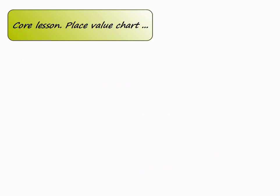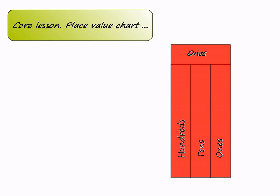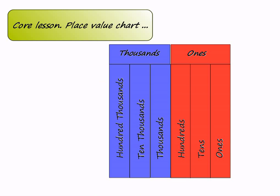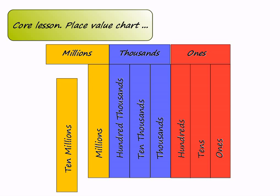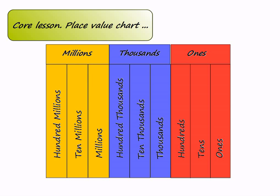A place value chart is a chart or table used to determine the position and value of a digit in a number. To the extreme right we have ones, then tens, then hundreds. After hundreds we start with thousands, ten thousands, and hundred thousands. After hundred thousands we have millions, ten millions, and finally hundred millions.